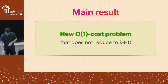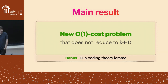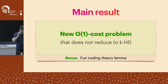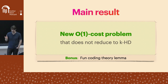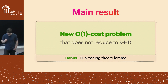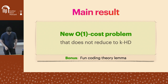What's more interesting than constructing an artificial problem is showing that you cannot reduce it to Hamming distance. This involves a new connection to coding theory, and it's actually this coding theory connection that drew me into this project. I want to at least state the new coding-theoretic connection we found.